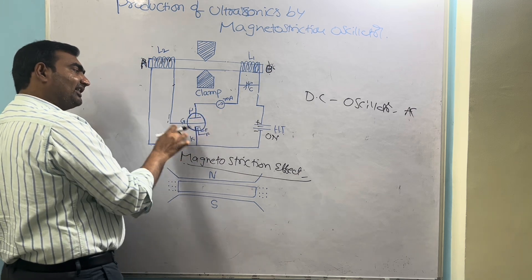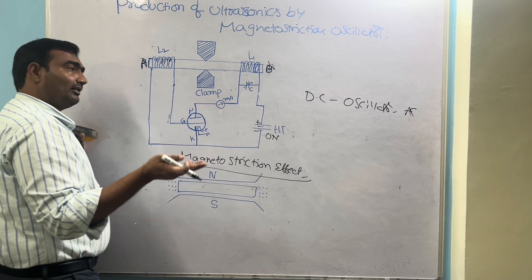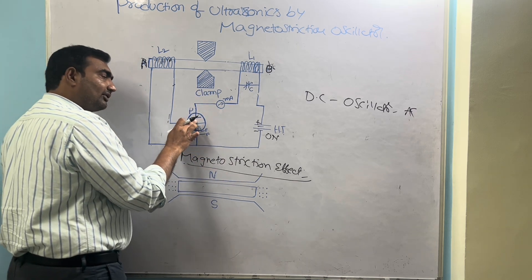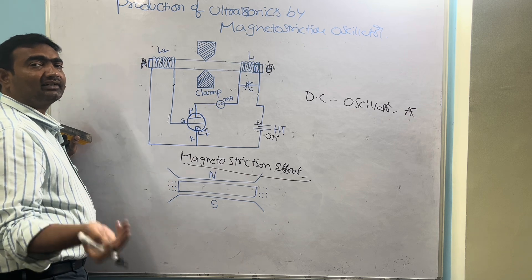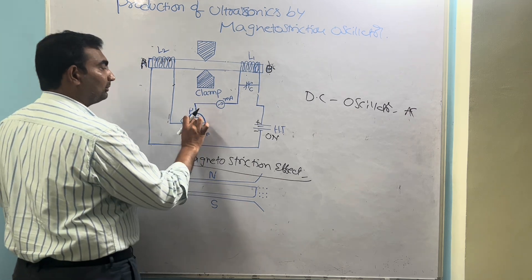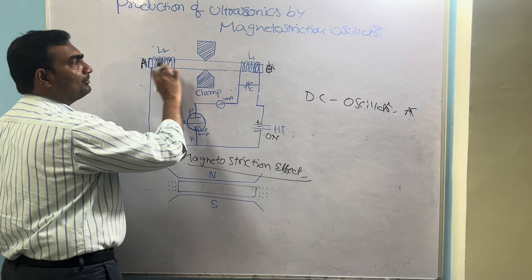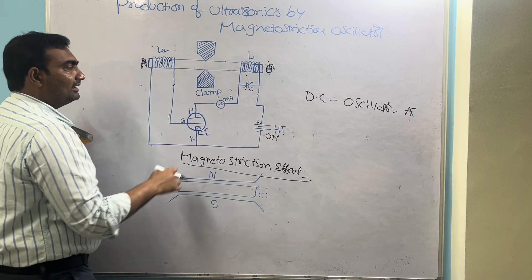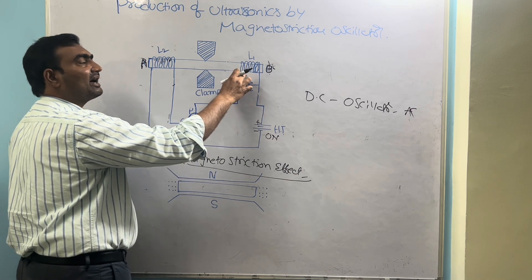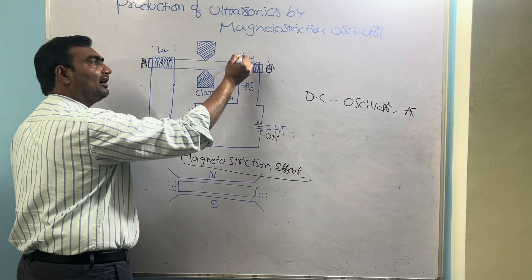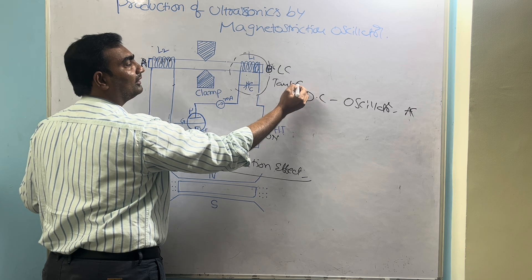This device is called a triode valve. Nowadays these triode valves are being replaced with transistors. The triode valve has three important parts: grid circuit, plate circuit, and cathode — analogous to the emitter, base, and collector of a transistor. There is also a clamp placed at the center of the rod, a milliamp meter to measure current flow, and a capacitor placed in parallel with inductor L1, forming a tank circuit. This LC circuit is called a tank circuit.